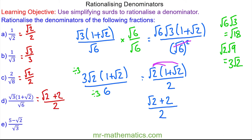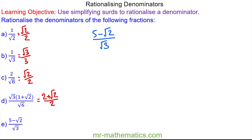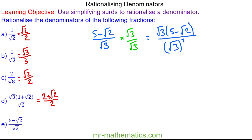Do you want to try and rationalise the denominator in question e and then simplify the result? You can pause the video and resume it when you're ready. For question e we'll multiply the numerator and denominator by the square root of 3. So we have root 3 lots of 5 minus root 2, over root 3 squared — and these will cancel. Expanding the brackets in the numerator, we have 5 root 3 minus root 3 times root 2, which is the square root of 6, over 3.